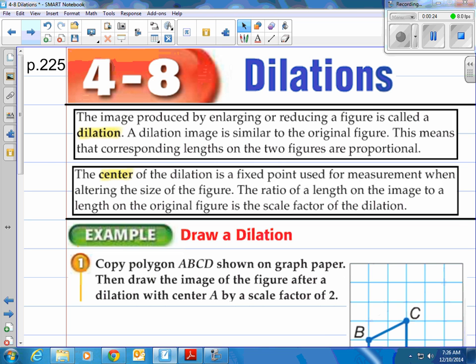A dilation image is similar to the original figure meaning that its corresponding lengths on the two figures are proportional and the angles are equal or congruent. The center of the dilation is a fixed point used for measurement when altering the size of the figure. The ratio of a length on the image to a length on the original figure is the scale factor of the dilation.